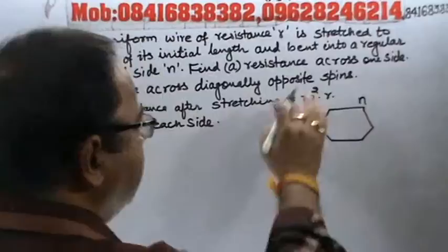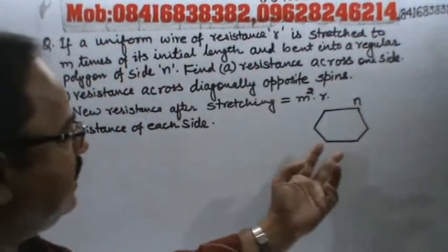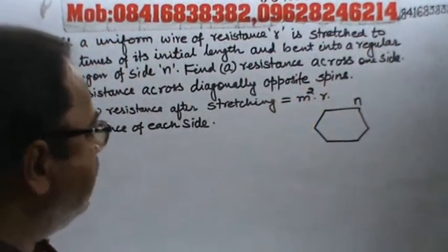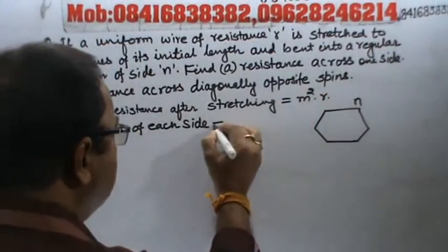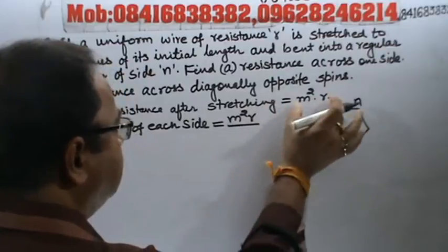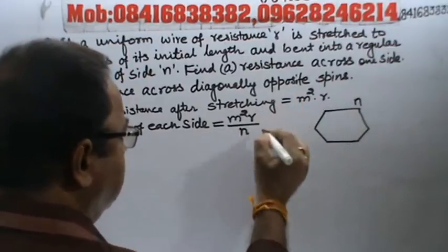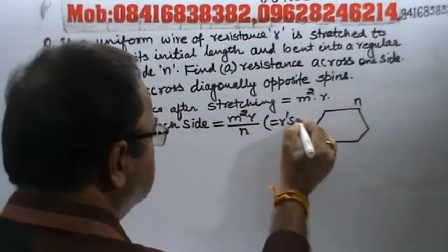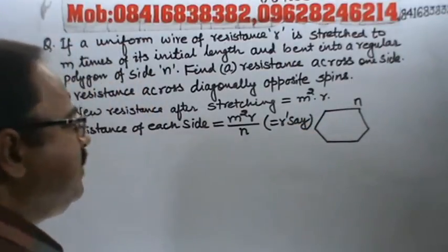N side ka polygon hai. So, the total resistance divided by n. So, this will be equal to m squared R divided by n. This is the total resistance divided by n. Suppose, this is r dash.